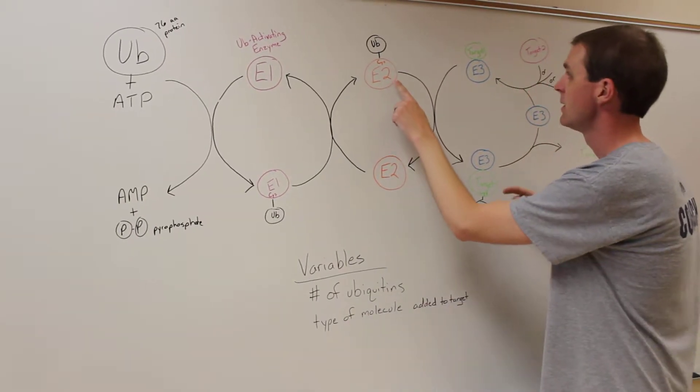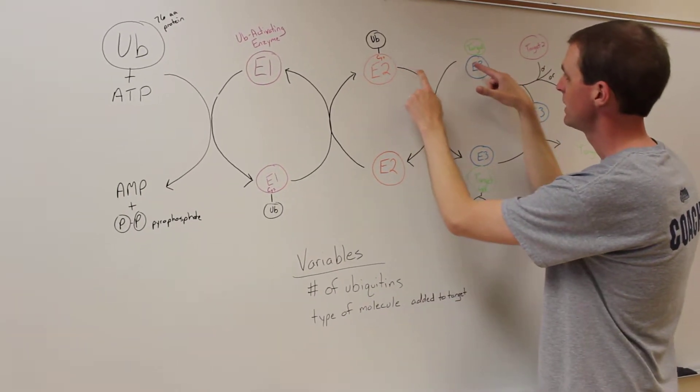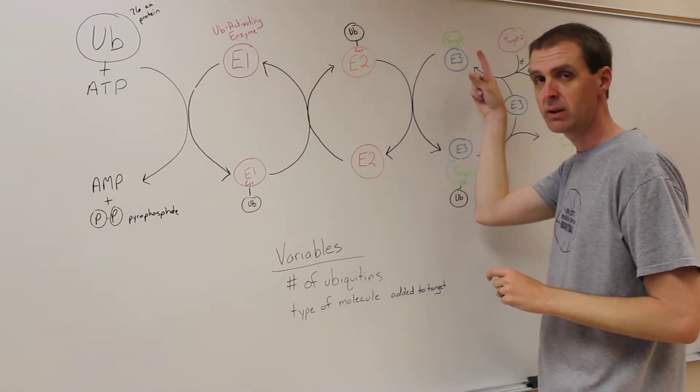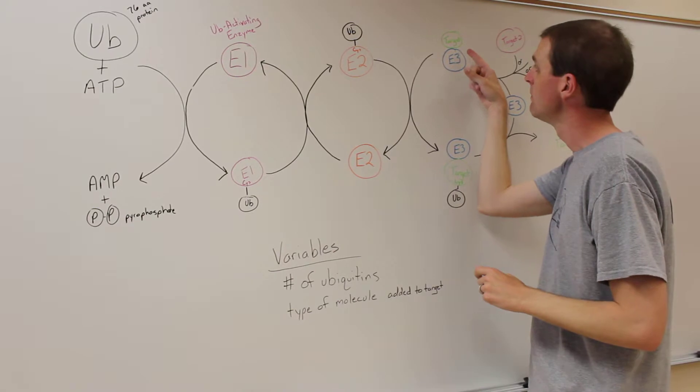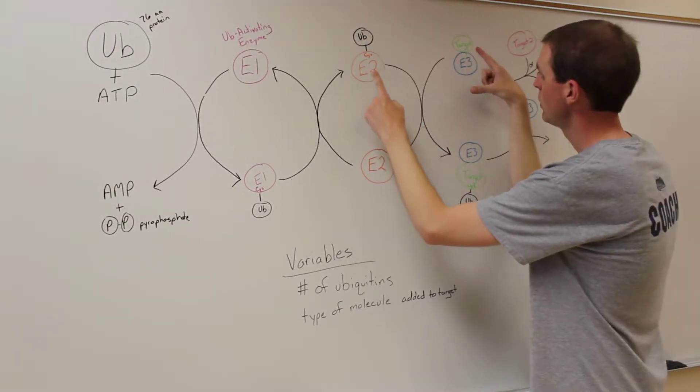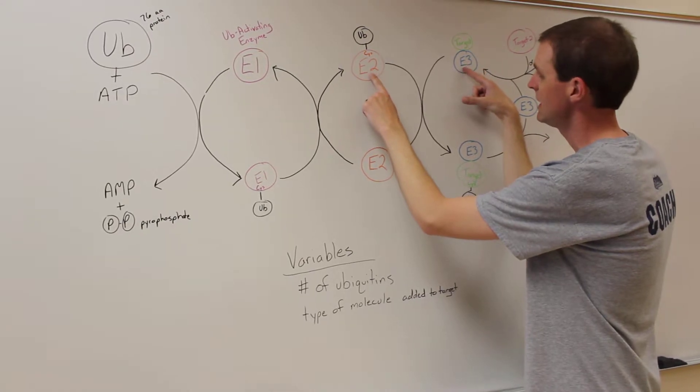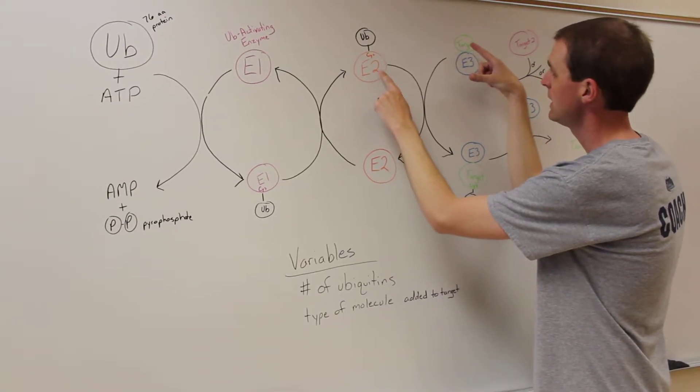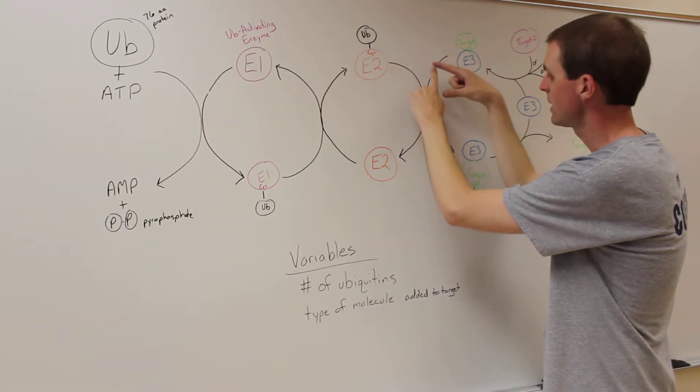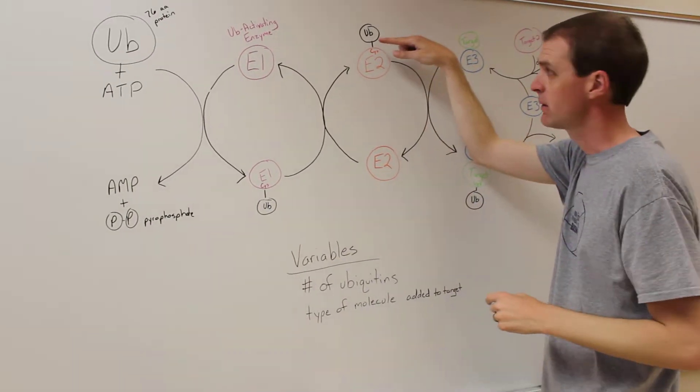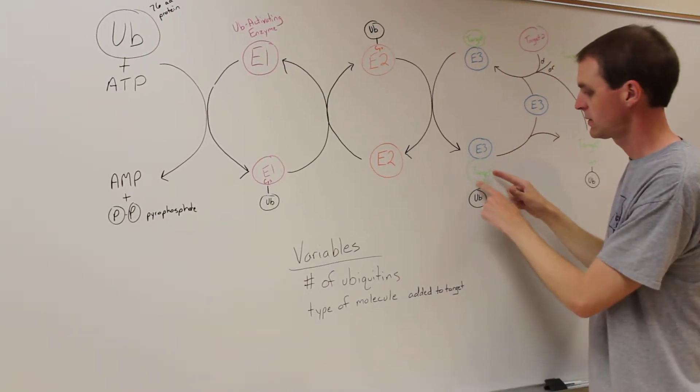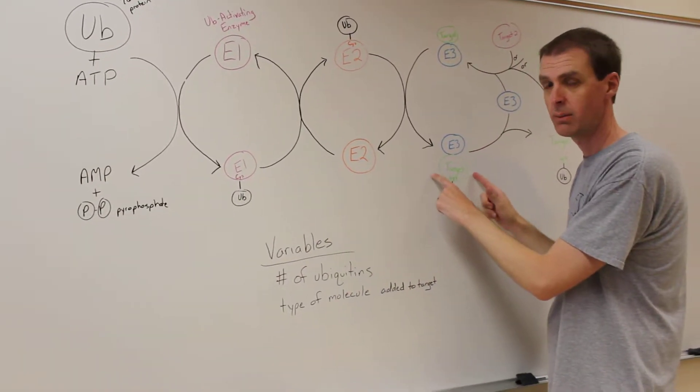Then the E2 interacts with an E3 protein and importantly for the type of E3 enzymes that we study, the E3 protein interacts directly with the target. When there is an interaction between the E2 and E3, the E2 is brought into close enough proximity to the target protein that the ubiquitin, rather than being transferred onto the E3 enzyme, gets transferred onto the target protein.